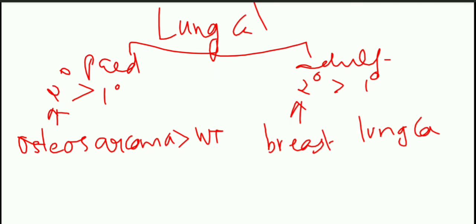When you take overall, lung cancer is the most common cause, more than breast cancer. Lung cancer here means metastasis from the other lung. So this is what secondary tumours in the lung are — they are more common than primary tumours.